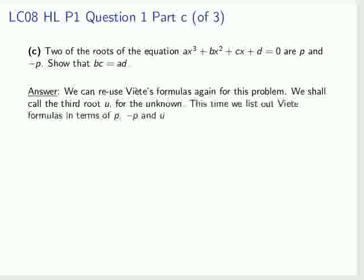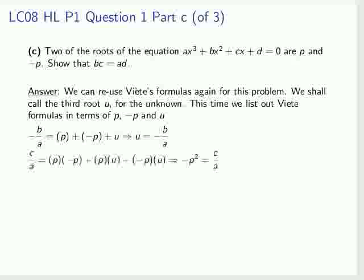We'll call the third root u for the unknown, so we have p, minus p, and u. This time we're going to list out Viète's formulas in terms of p, minus p, and u. Minus b over a equals p plus minus p plus u. We see the two p's cancel, and we get our unknown root equals minus b over a. C over a equals p times minus p plus p by u plus minus p by u. The p by u's cancel, and we're left with minus p² equaling c over a.